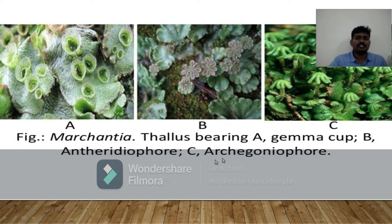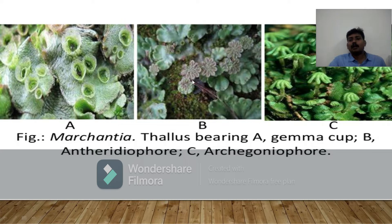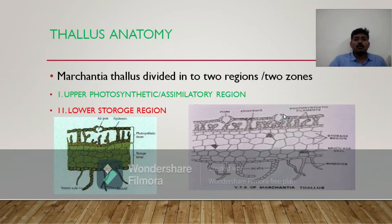When we observe this diagram, these are all gemma cups — this is the thallus of greenish color. These cup-shaped structures are called gemma cups. We can also observe the reproductive parts: the antheridiophores and the archegoniophores. Coming to the point of thallus anatomy, the Marchantia thallus is divided into two regions or two zones.